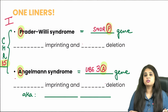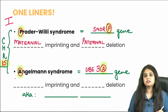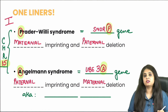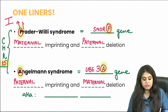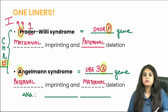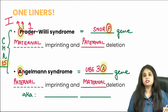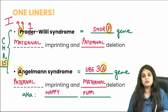We need to know what is imprinted and what is deleted. In Prader-Willi there is paternal deletion and maternal imprinting; in Angelman it's the other way — maternal deletion and paternal imprinting. The mnemonic: 'Papa's region is deleted,' so Prader-Willi is always paternal deletion. Also remember that Angelman babies are known as happy puppets because of their inappropriate laughter.